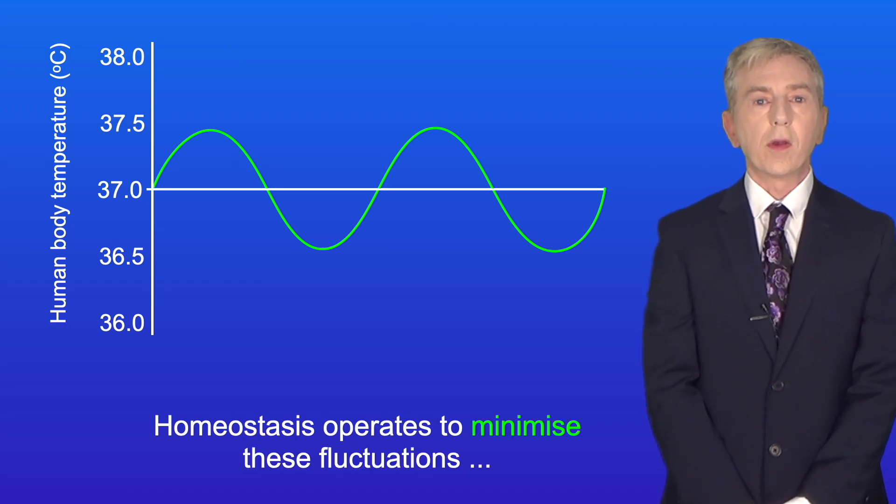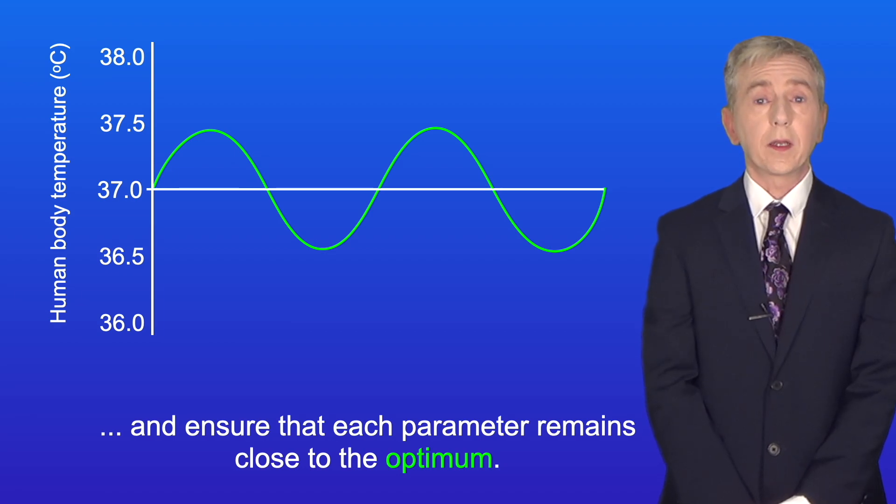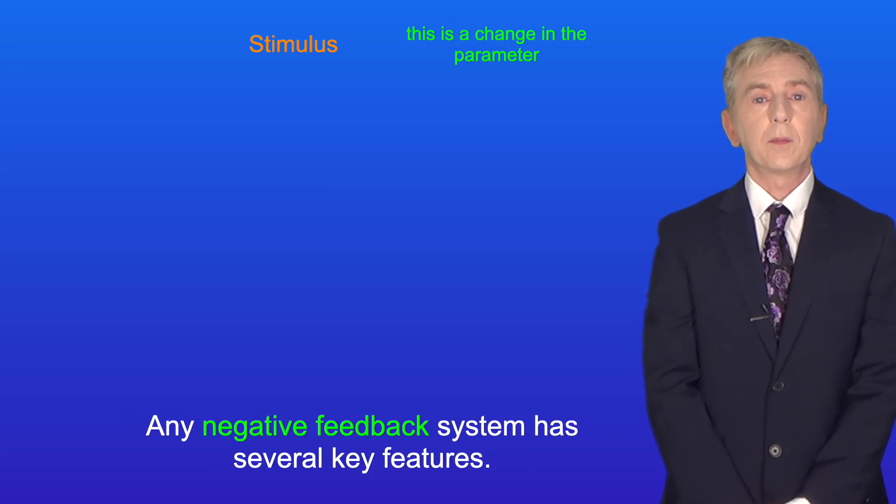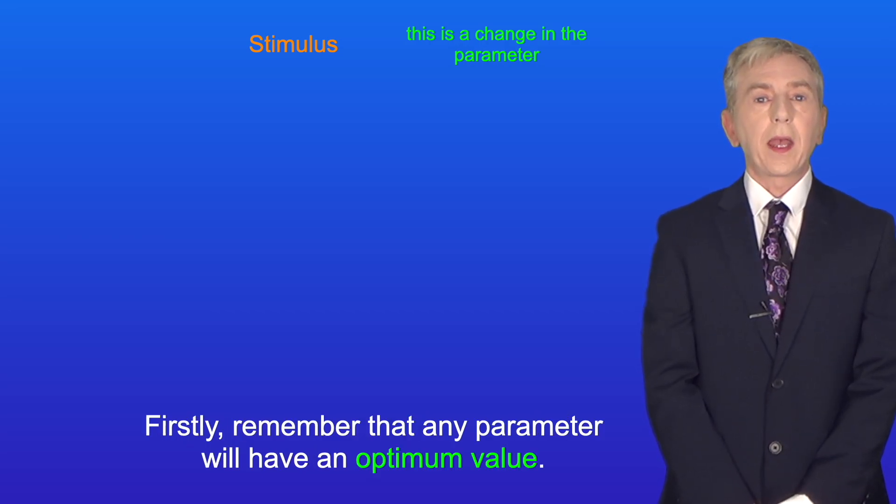Homeostasis operates to minimize these fluctuations and ensure that each parameter remains close to the optimum. To do this, homeostasis uses a process called negative feedback. And any negative feedback system has several key features. Firstly, remember that any parameter will have an optimum value.